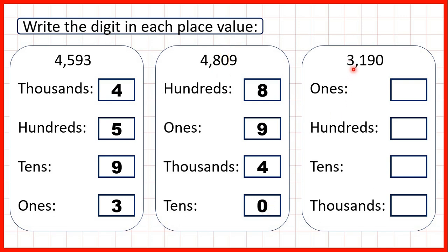Finally, we have 3,190. So the ones digit is a zero. The hundreds digit is one. The tens digit is nine. And the thousands digit is a three.